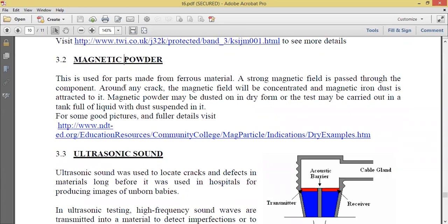This is used for parts from ferrous materials. A strong magnetic field is passed through the component, and around any crack, the magnetic field will be concentrated. You have that magnetic iron dust being concentrated in areas where there are cracks. So you generally spread it on a machine part, and then you pass a strong magnetic field through the component. In the areas where there's cracks, you'll find that the magnetic dust will be more attracted to those areas. Where you have more gatherings of the dust, there should be some cracks in that area. The magnetic powder is later dusted in a dry form. The test also can be carried out in a tank full of liquid with dust suspended in it.